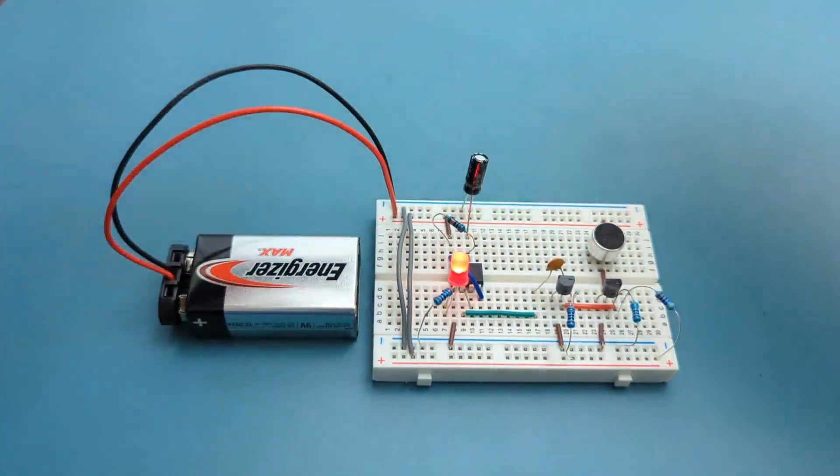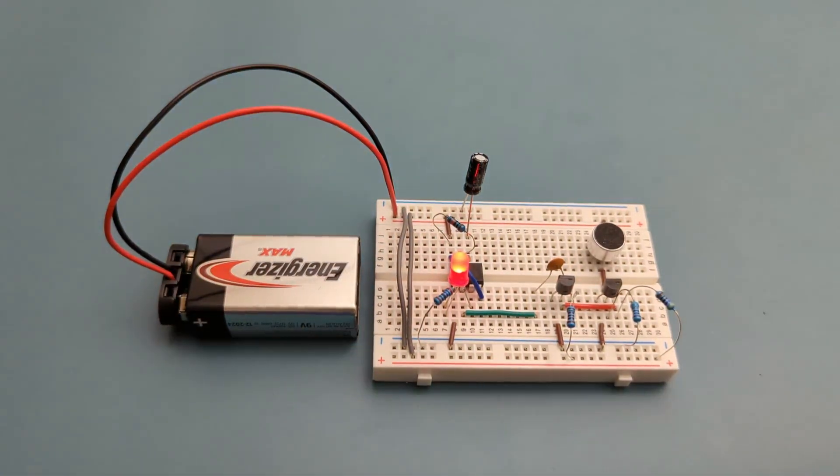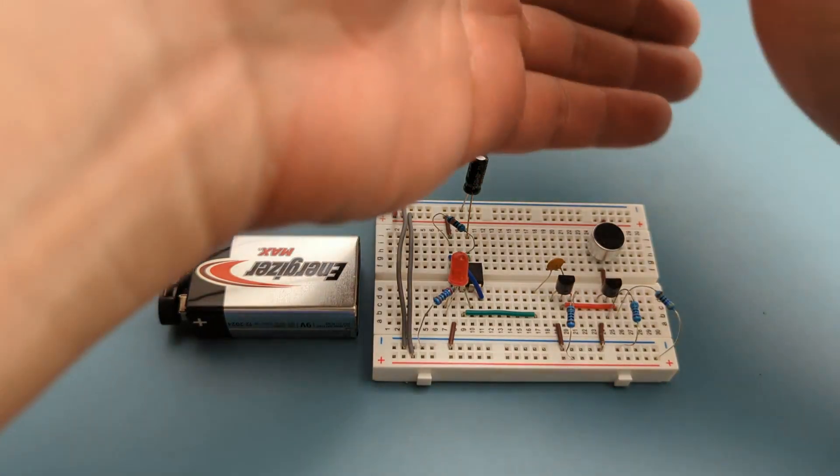What if you could turn on lights or devices just by clapping your hands? What if you could build one yourself, using just a 555 timer, a few components, and some basic wiring?